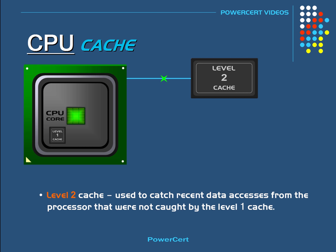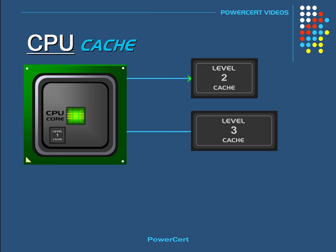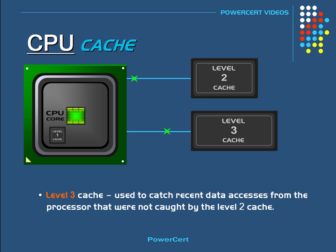If the CPU can't find the data it needs in the level 1 cache, it then searches the level 2 cache. If it still can't find the data in the level 2 cache, it searches the last level of cache, which is level 3. Level 3 cache is used to catch recent data accesses that were not caught by the level 2 cache. Finally, if level 3 doesn't have the data, the CPU has to go back to the slower RAM to find what it needs.